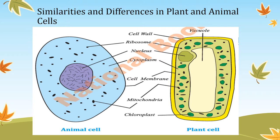The third difference is the vacuole. A single large-sized vacuole is present in the plant cell, but in animal cells, only small vacuoles are present. We will now learn about these similarities and differences one by one.